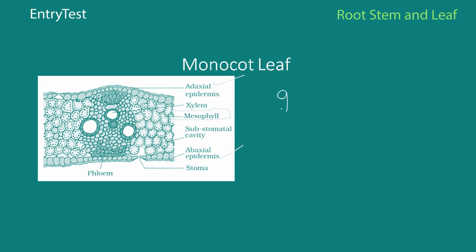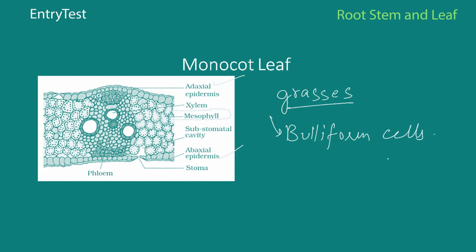In special plants like grasses, certain adaxial epidermal cells get converted into bulliform cells — large, empty, colorless cells. When these cells absorb a lot of water and become turgid, the leaf surface is completely exposed. The main layers of the monocot leaf are the epidermis, the mesophyll, the vascular bundles of xylem and phloem, and the substomatal cavity around the stoma.